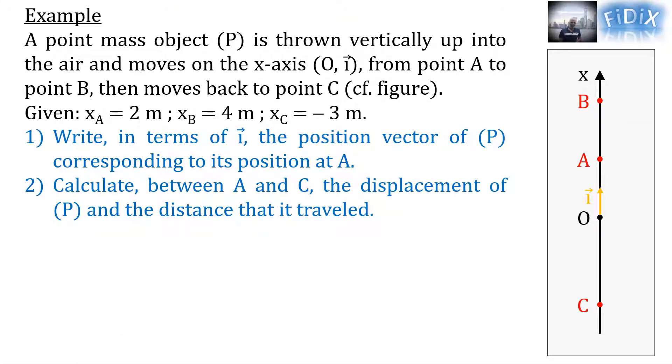Example: A point mass object P is thrown vertically up into the air and moves on the x-axis OI from point A to point B, then moves back to point C. Knowing that the abscissa XA equals 2 meters, XB equals 4 meters, and XC equals negative 3 meters. Question 1: Write in terms of I the position vector P corresponding to its position at A.